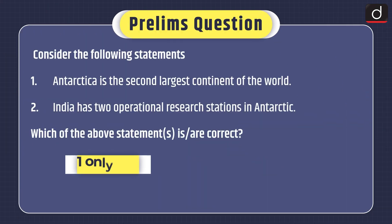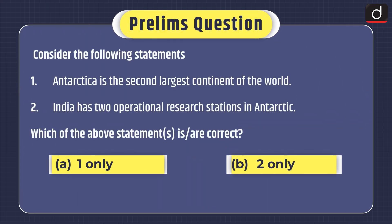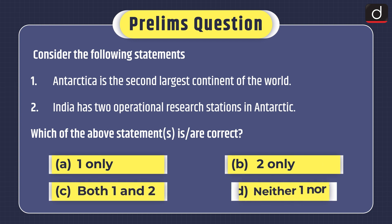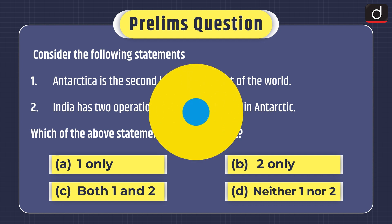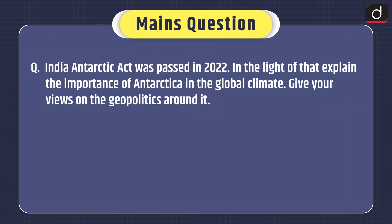Now, some practice questions. Prelims question: Consider the following statements — (1) Antarctica is the second largest continent of the world; (2) India has two operational research stations in Antarctica. Which statement(s) is/are correct? Mains question: The Indian Antarctic Act was passed in 2022. In light of that, explain the importance of Antarctica in global climate and give your views on the geopolitics around it.